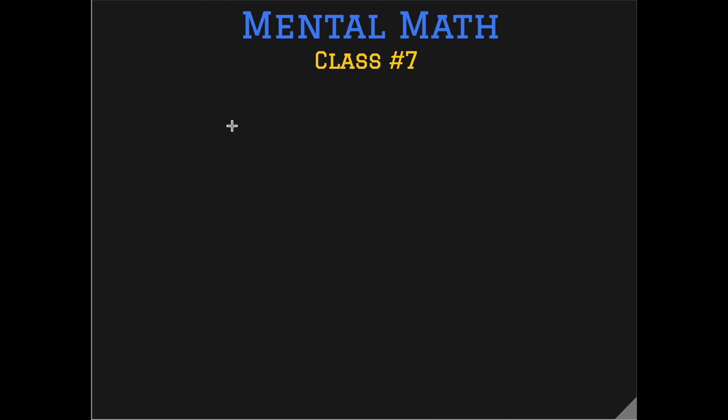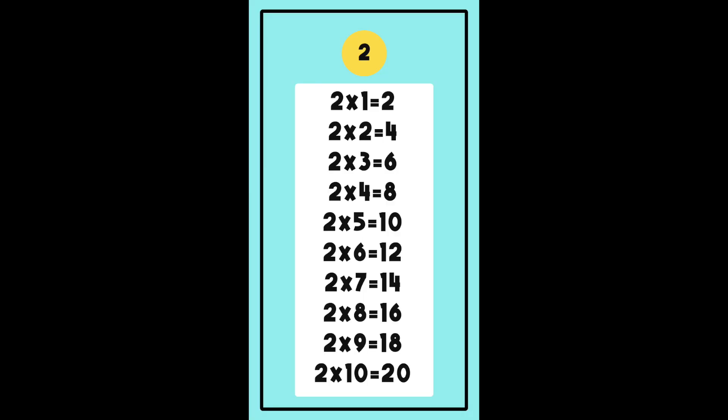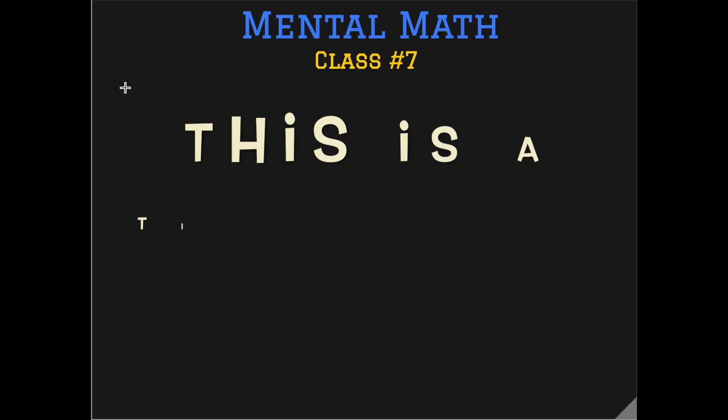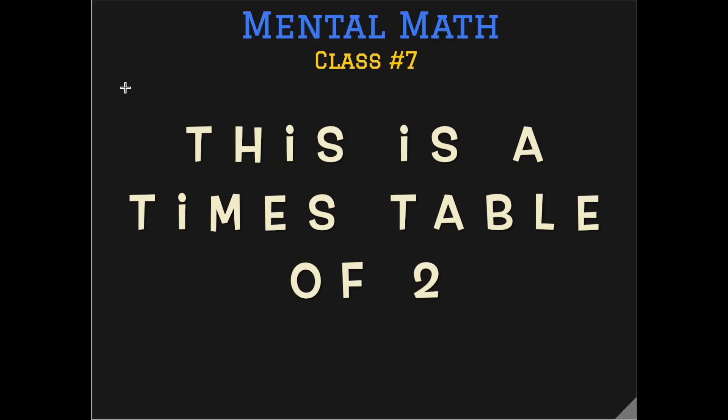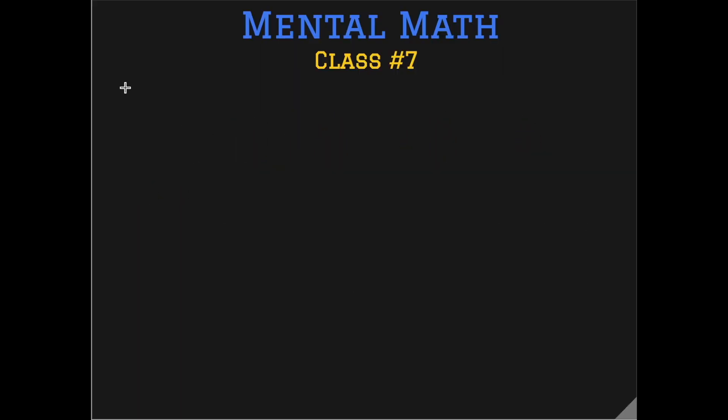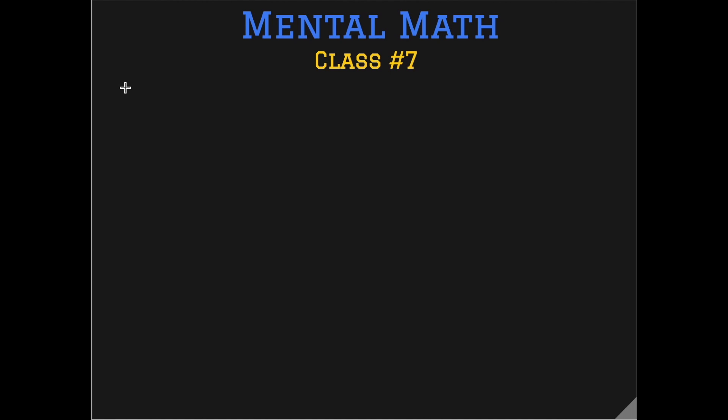Now we normally learn these multiplication facts of a number for example 2 till 10. For example 2 multiplied by 1, 2 multiplied by 2 and so on till 2 multiplied by 10 and this is called a times table. So I will tell you how you can learn these times tables. I will teach you some tricks.